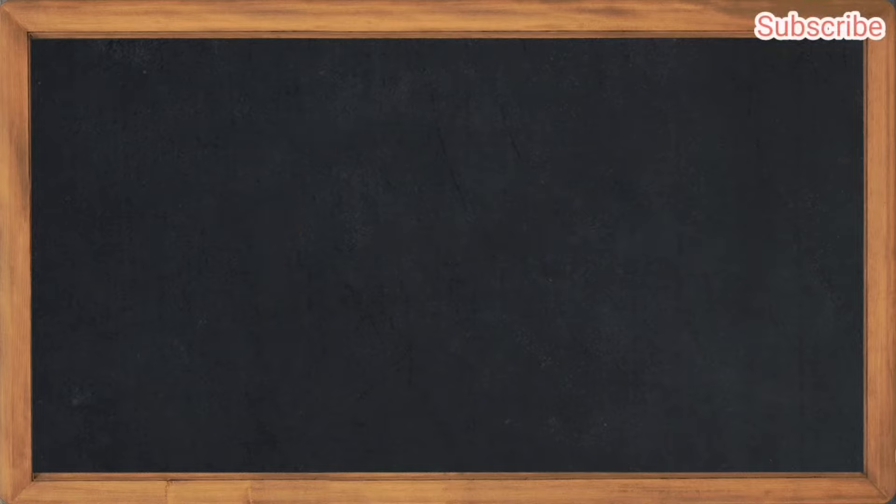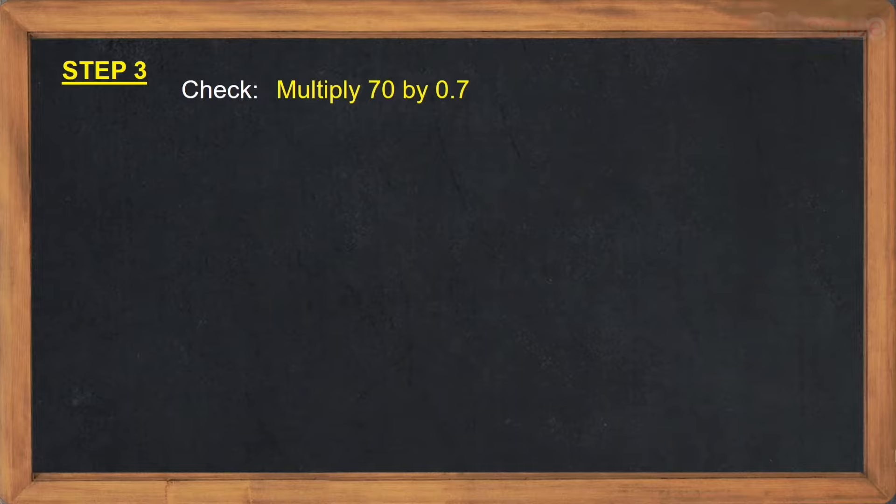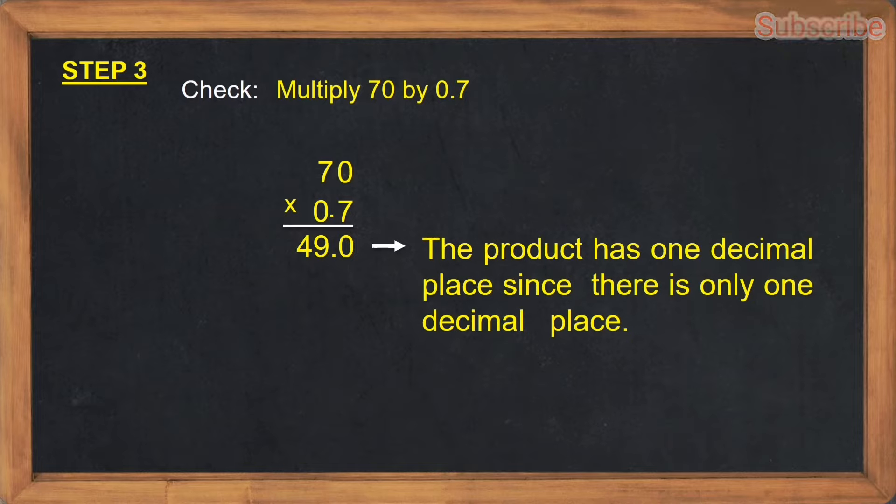So to know if our answer is correct or wrong, we need to check our answer. For step number three, we have to check. How to check? We have to multiply 70 by 0.7. 70 times 0.7, that is 49. The product has one decimal place since there is only one decimal place.